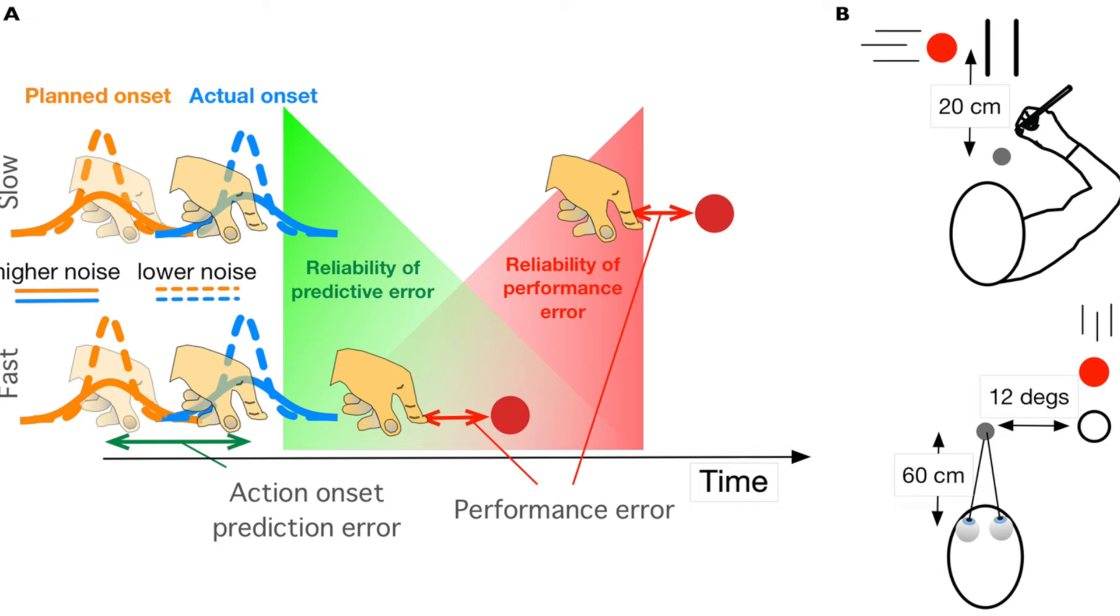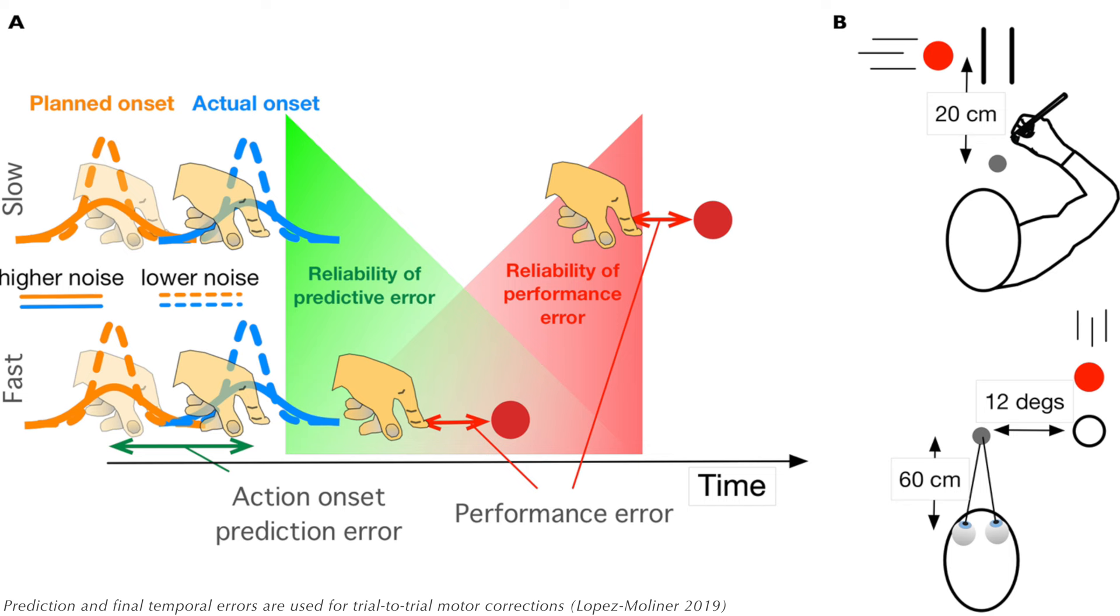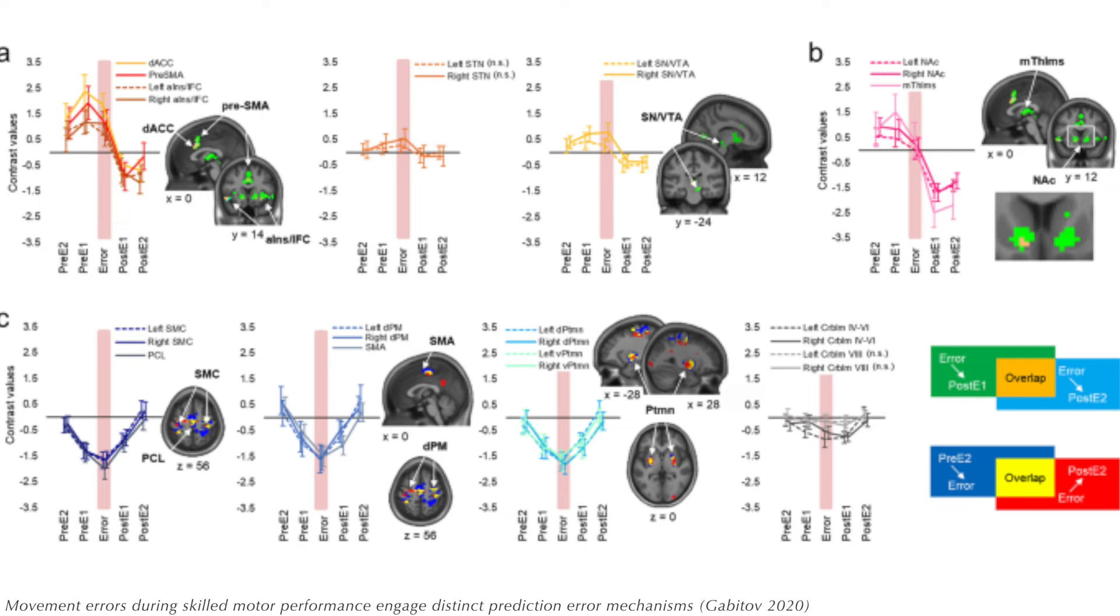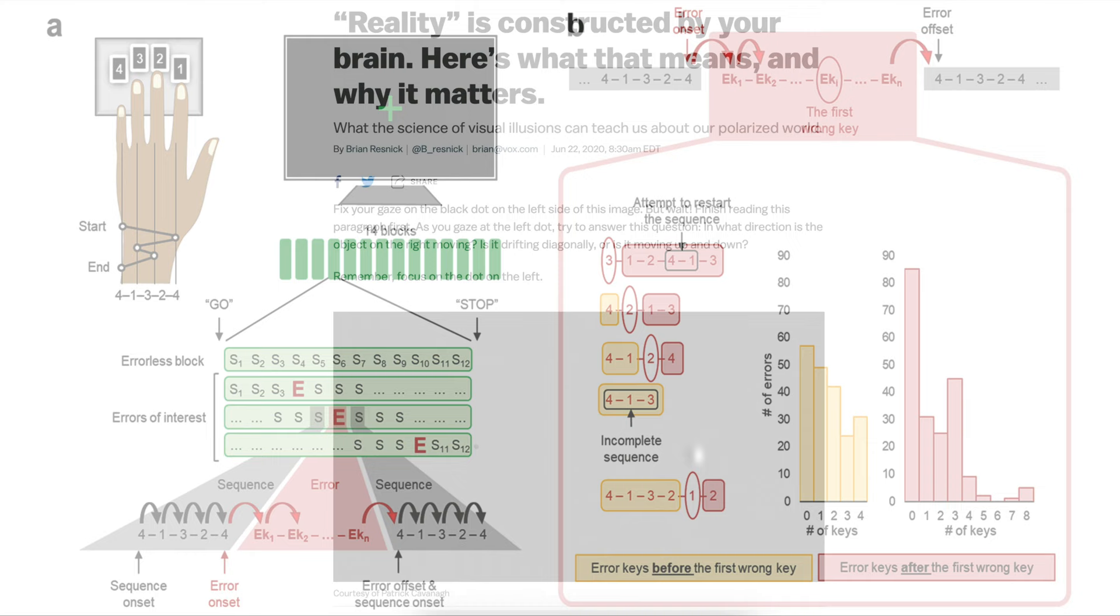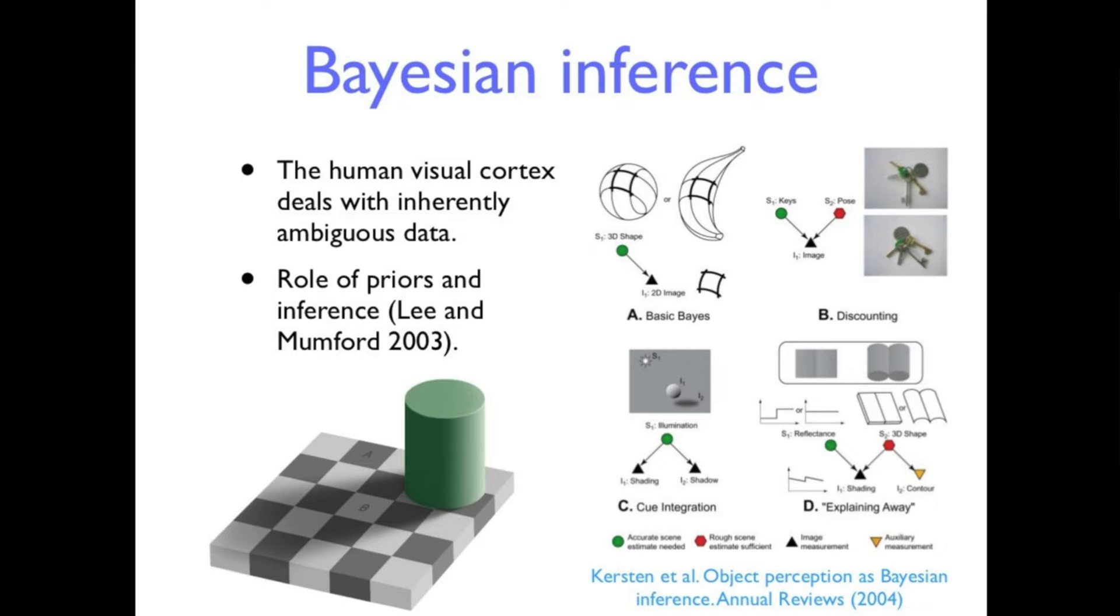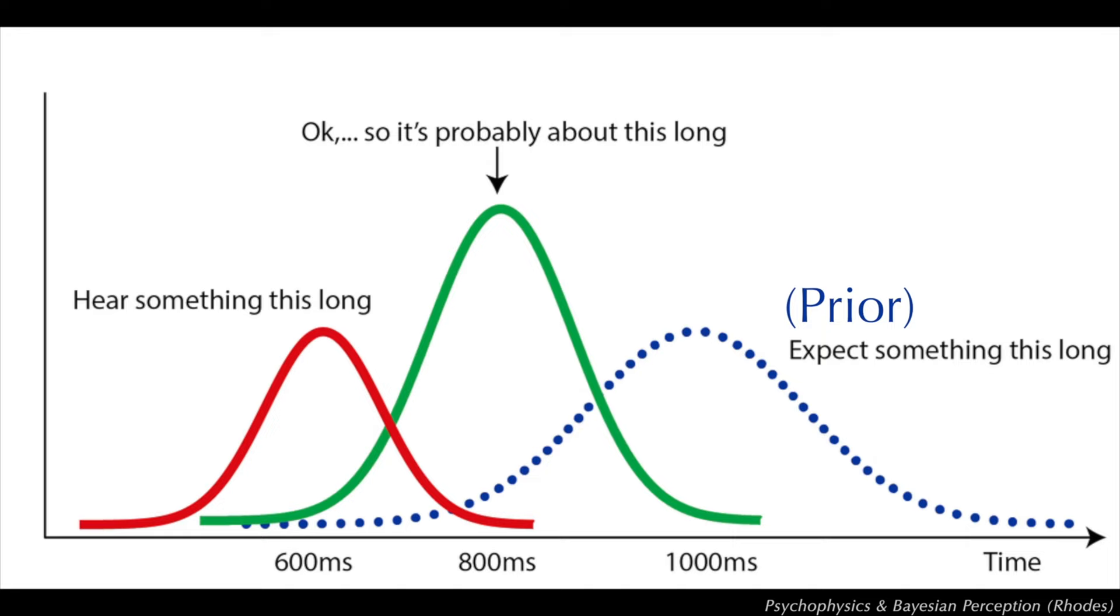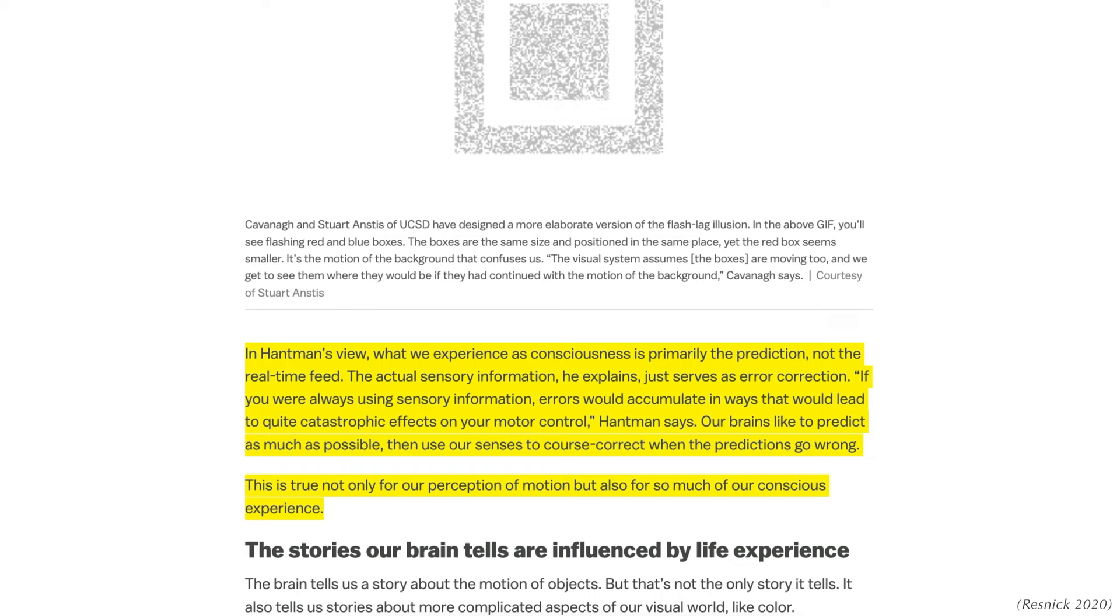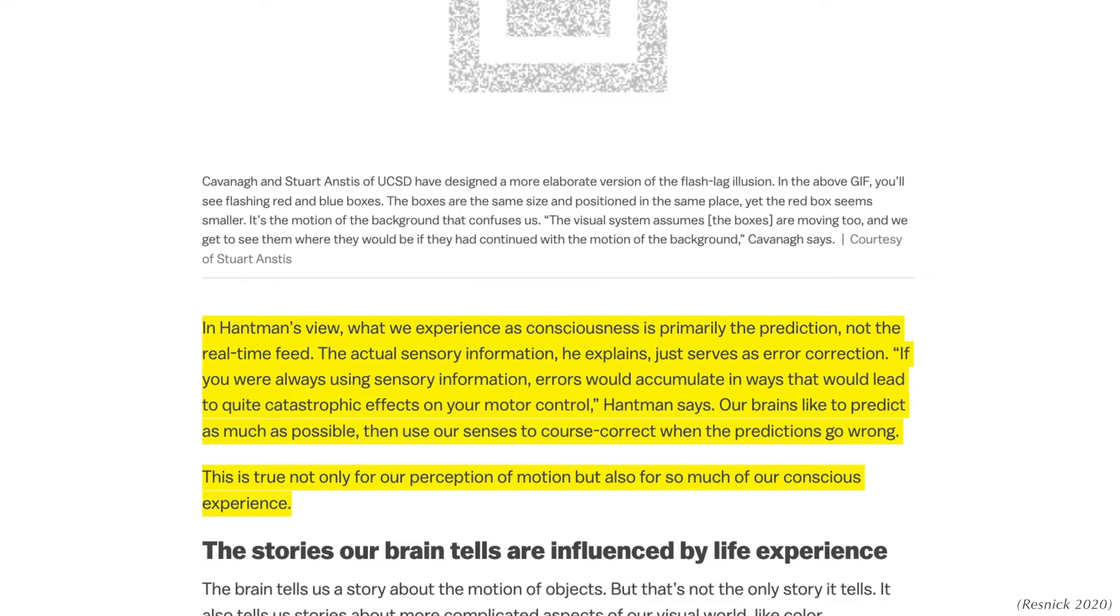You could say humans are basically error-correcting prediction engines, though we take for granted that our sensory systems are slow. Visual perception in particular lags behind by hundreds of milliseconds. As Brian Resnick at Vox reports, what we experience as consciousness is primarily the prediction, not the real-time feed. The actual sensory information just serves as error-correction. Neuroscientist Adam Handman says that if you're always using sensory information, errors would accumulate in ways that would lead to quite catastrophic effects on your motor control. Our brains like to predict as much as possible, then use our senses to course-correct when the predictions go wrong. This is true not only for our perception of motion, but also for so much of our conscious experience.